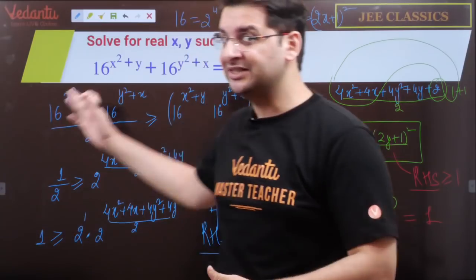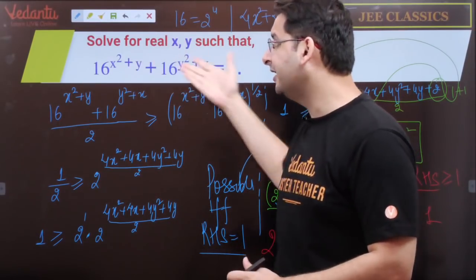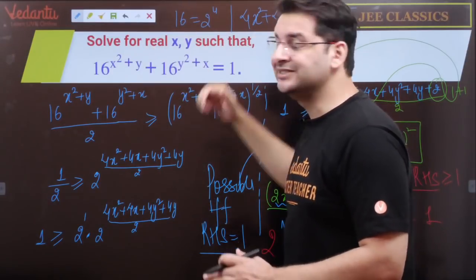This is the only real solution of this equation. And we can also verify. When x and y are -1/2, you substitute -1/2 and simplify this. You will get the left hand side equal to 1.